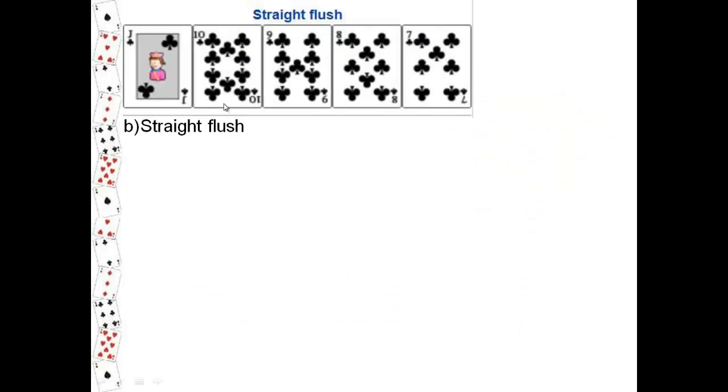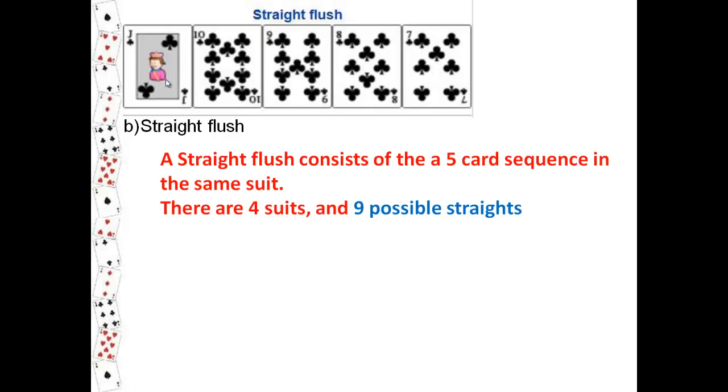Now a straight flush is where you have five cards in sequence of the same suit, like seven, eight, nine, ten, and jack. There are four suits - clubs, spades, diamonds, and hearts - and nine possible straights.